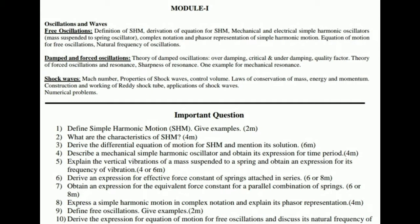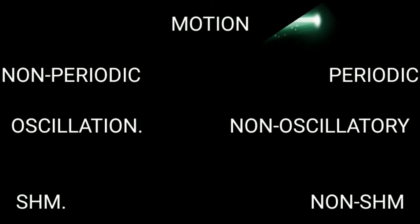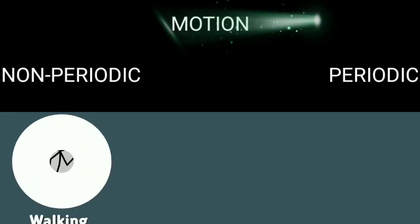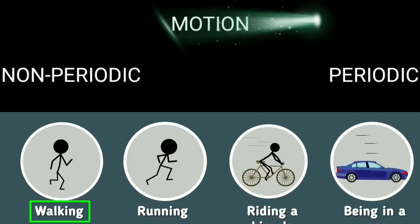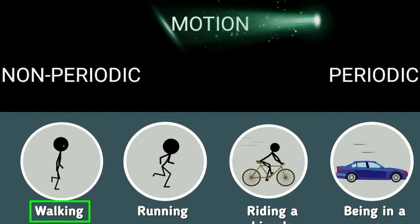Before we begin with free oscillation, let us understand some basic terms like motion. If any object or body changes its position with respect to time, that action we call motion. There are many types of motion: periodic, non-periodic, oscillatory, non-oscillatory, projectile, straight line, and more. We will concentrate mainly on two types: non-periodic and periodic.